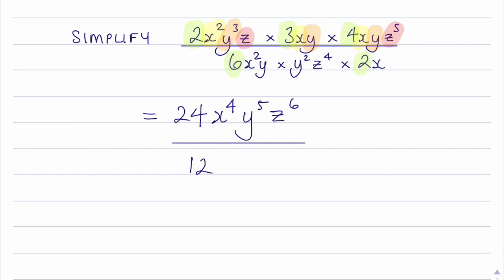Again working alphabetically, I'll look at the x terms. So I've got x squared here and x here. So that gives me x cubed.